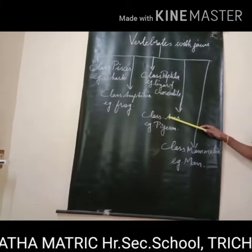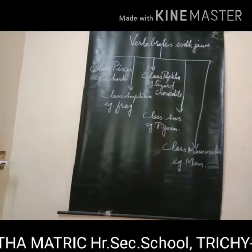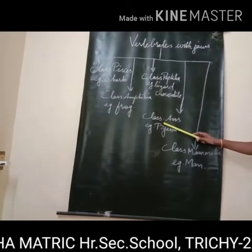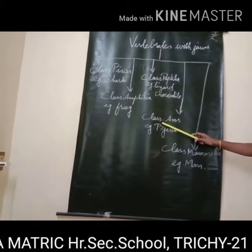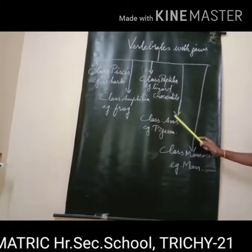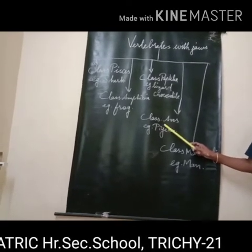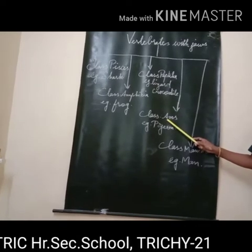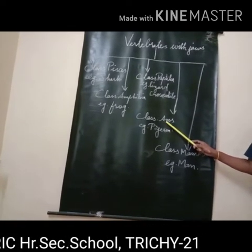Class Aves. Avis means birds. It is a homeothermic animal. It has a four-chambered heart. There is sexual dimorphism — a condition where two sexes of the same species exhibit different characteristics beyond the difference in their sexual organs.